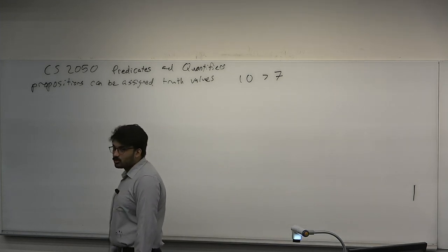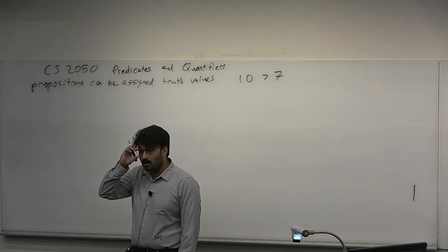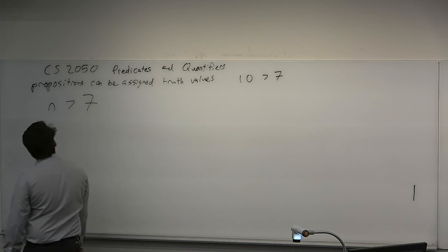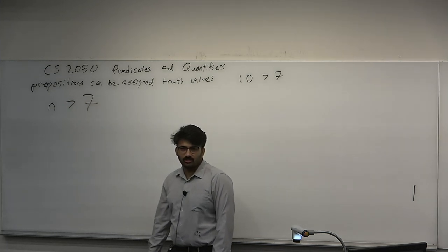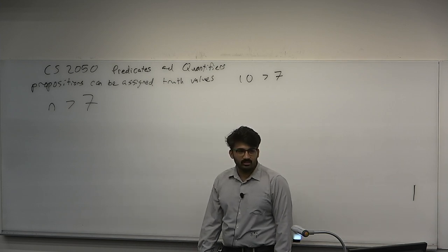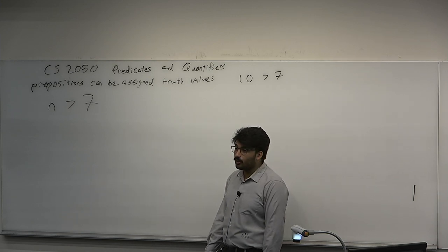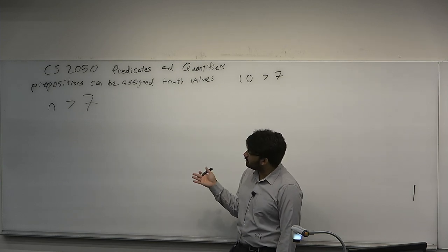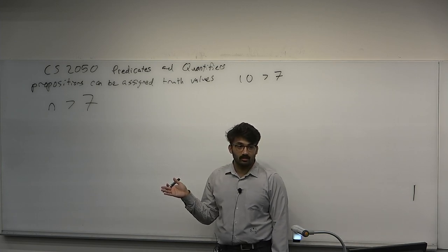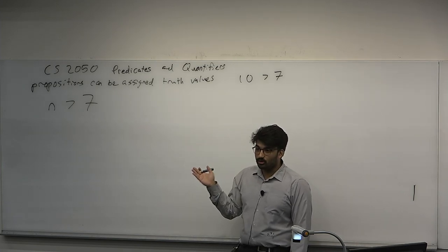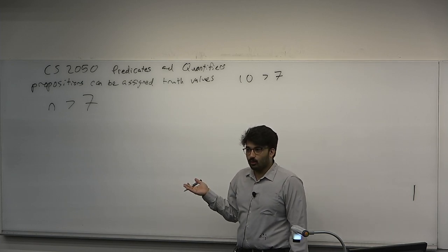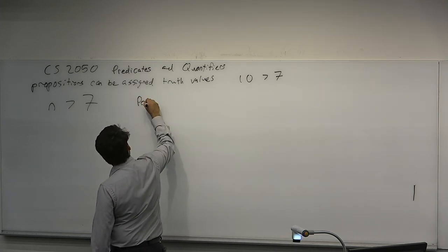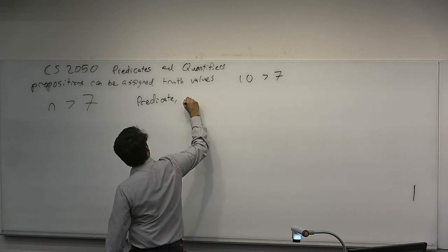There are some statements which appear to not be assignable a truth value. For example, 'n is greater than 7' is not a proposition. But we can still talk about truth relative to a certain statement, because if you were to fix n, you could assert a truth value. Just leaving n as it is, you cannot assign it a truth value because the truth depends on n. That's really what a function is. So what we can do is define what's called a predicate, or a propositional function.